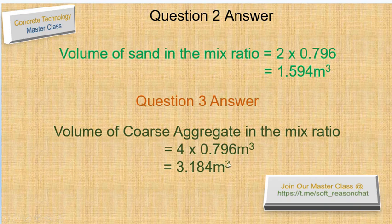For question three, the volume of coarse aggregate in the mix ratio is 4 times the unit value: 4 × 0.796 = 3.184 cubic meters. You can go to the marketplace and present this volume to get the coarse aggregate needed for the construction. You can also estimate the price based on these calculations.